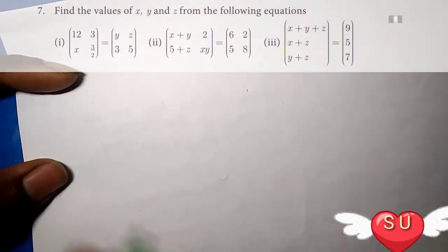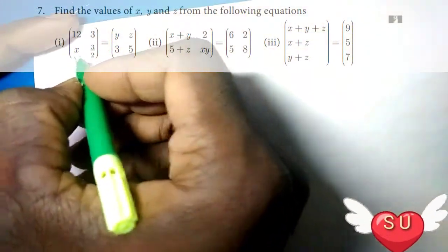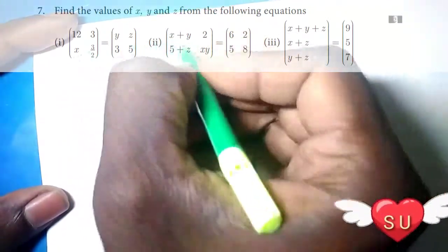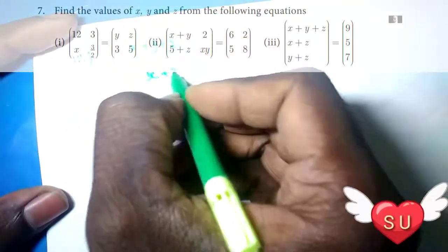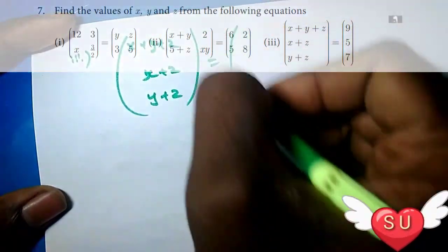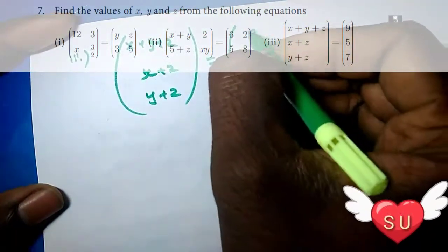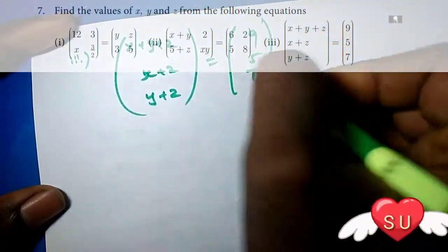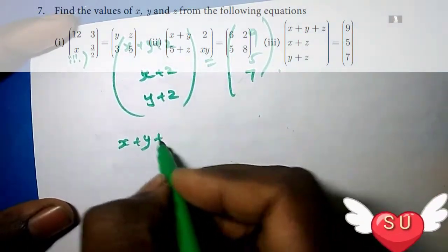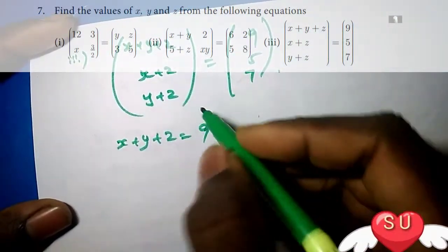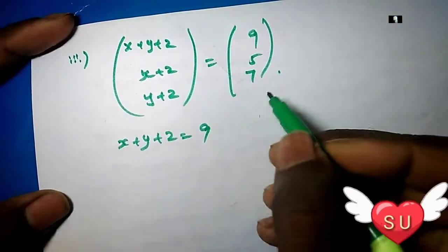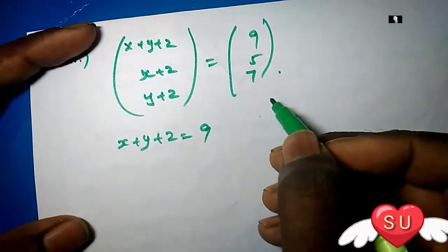Next, the third sum. The matrix is: x plus y plus z, x plus z, y plus z equal to 9, 5, 7. So x plus y plus z equals 9. Since the order of matrices are equal, corresponding elements are also equal.